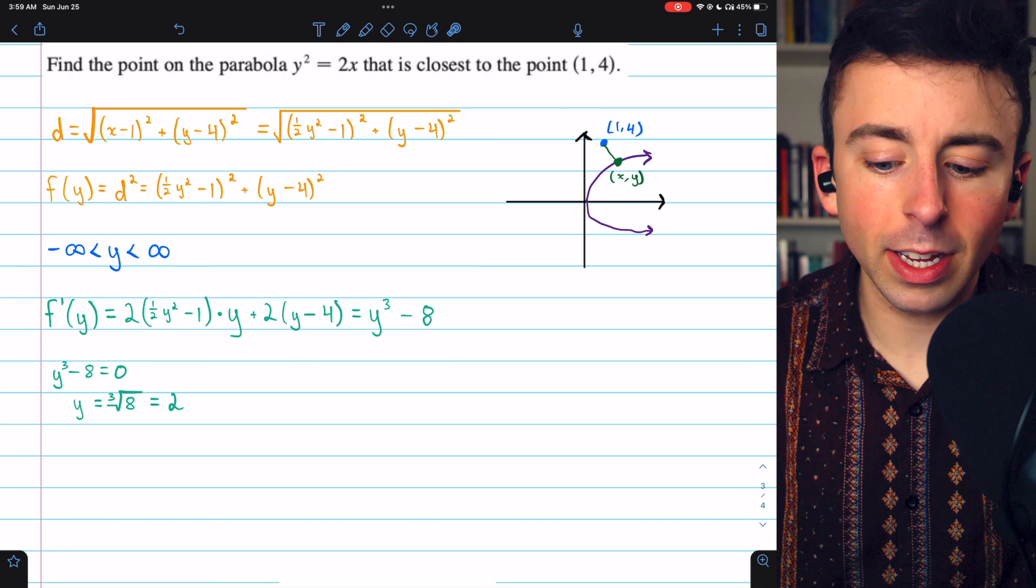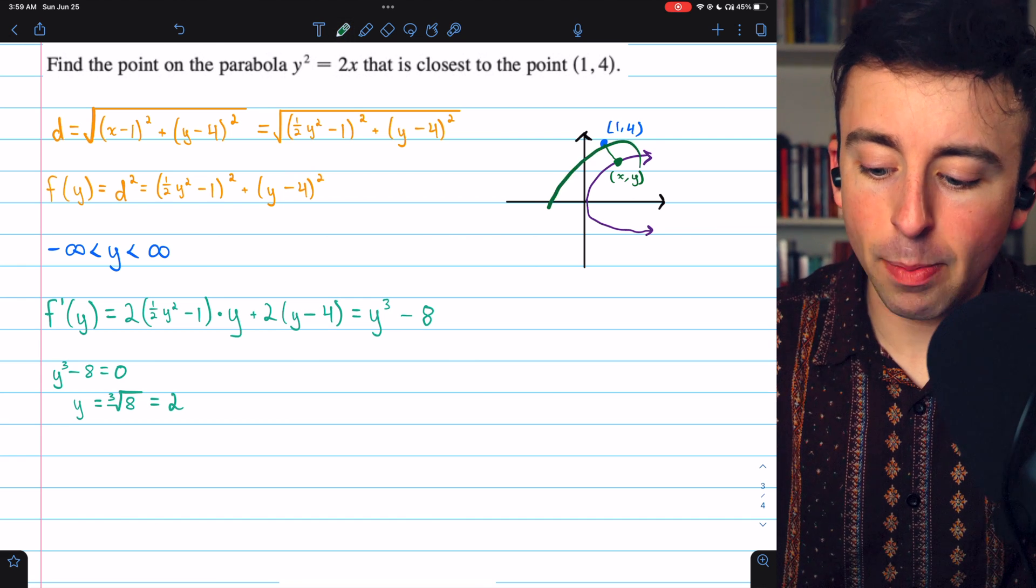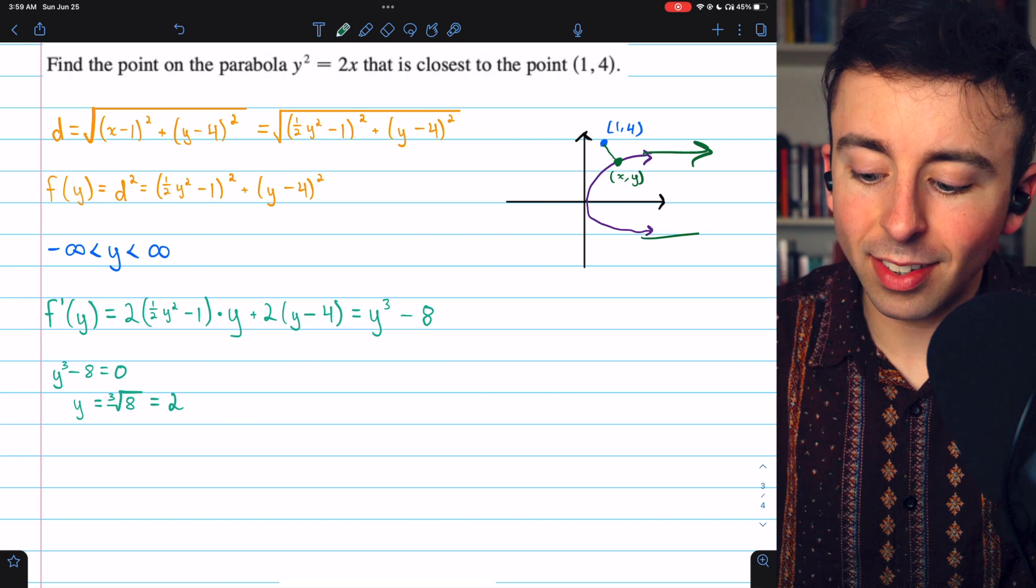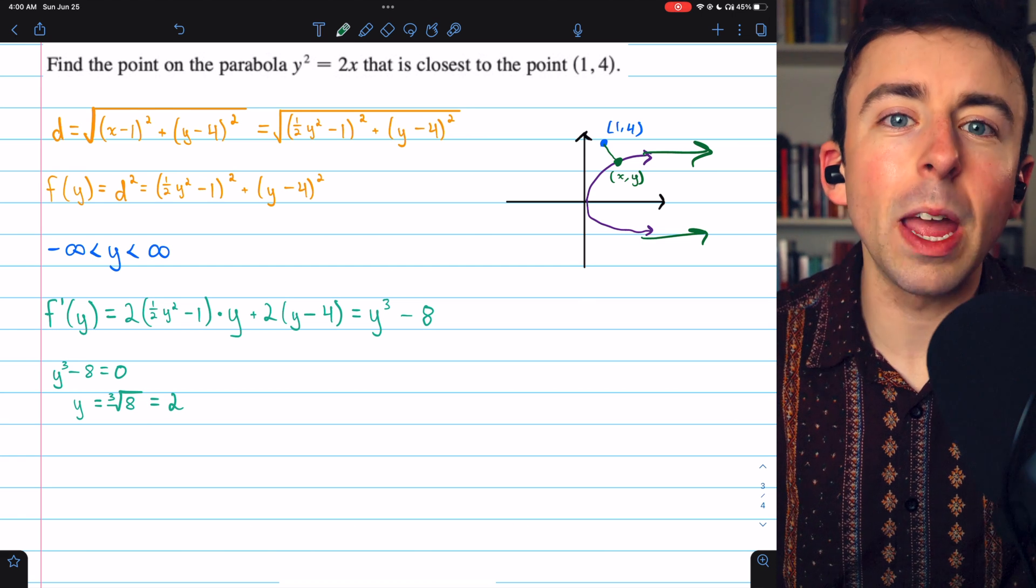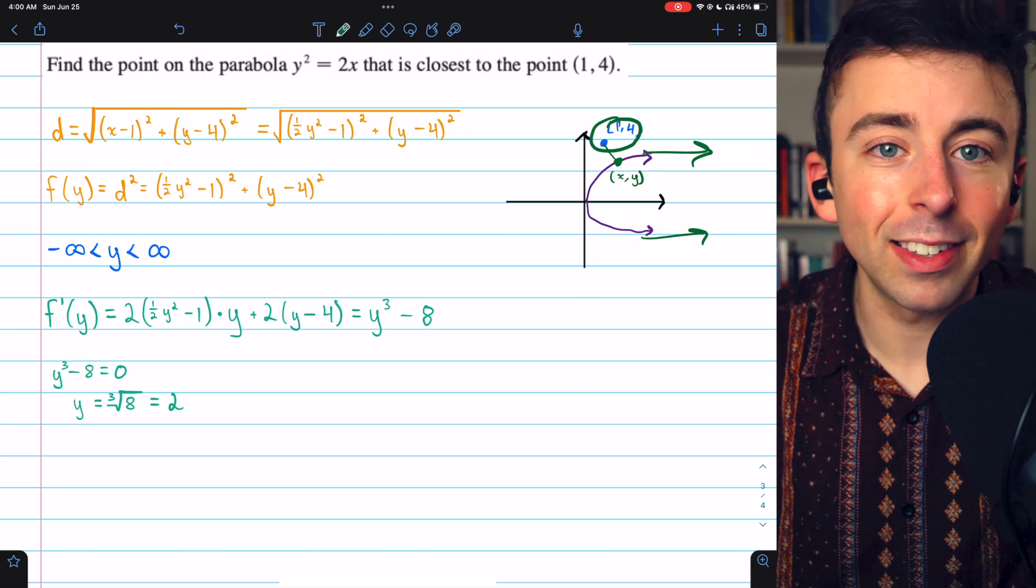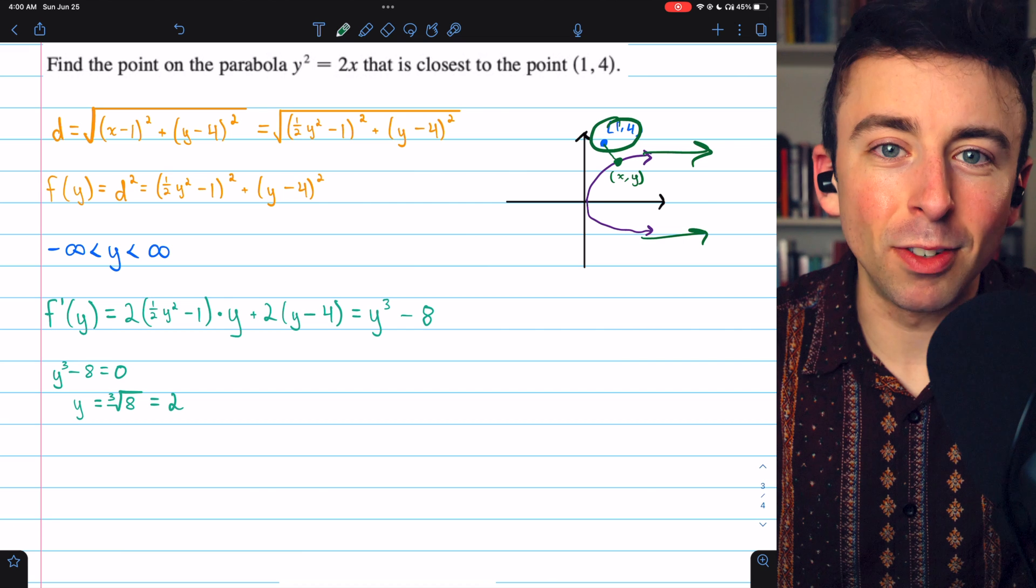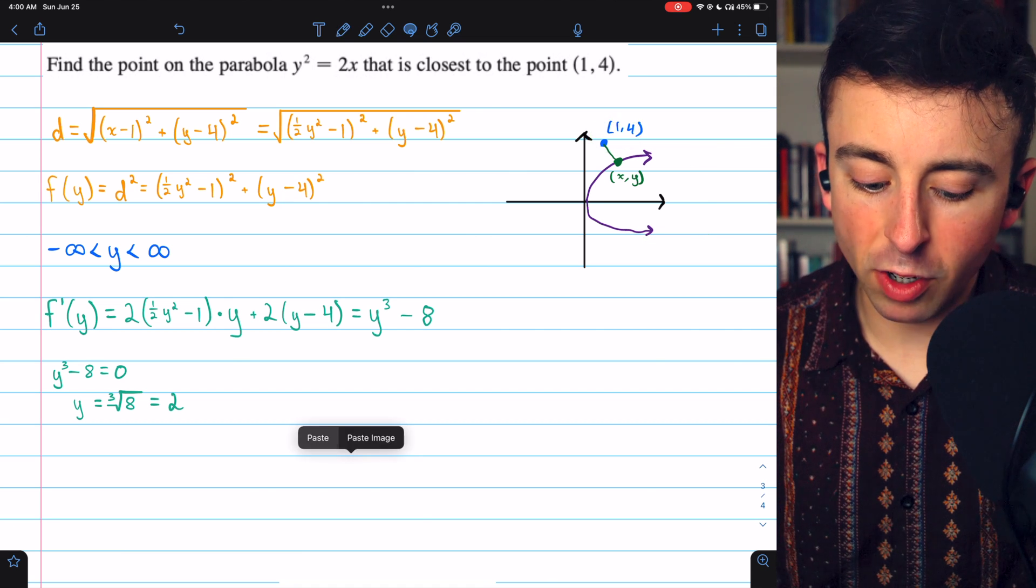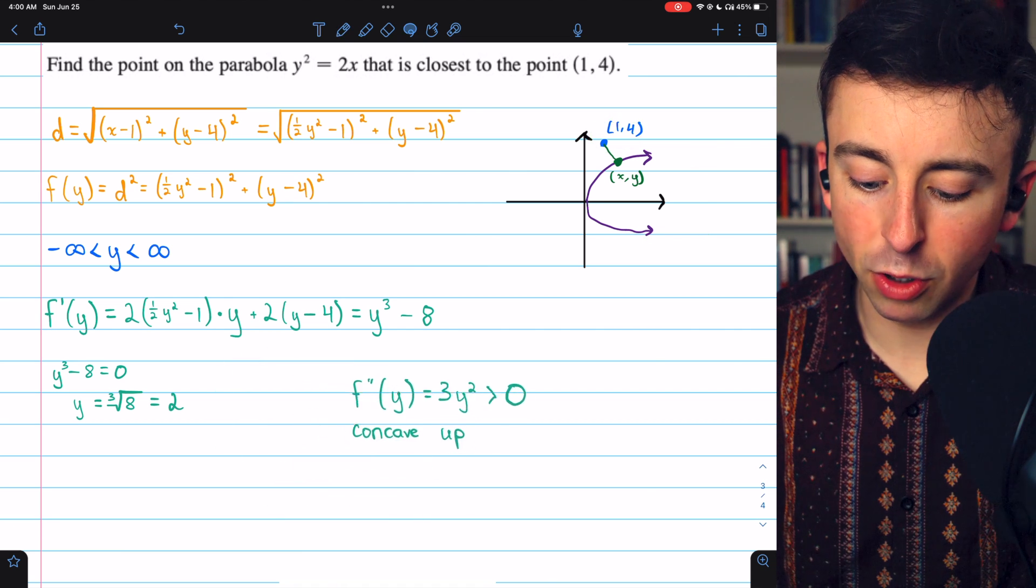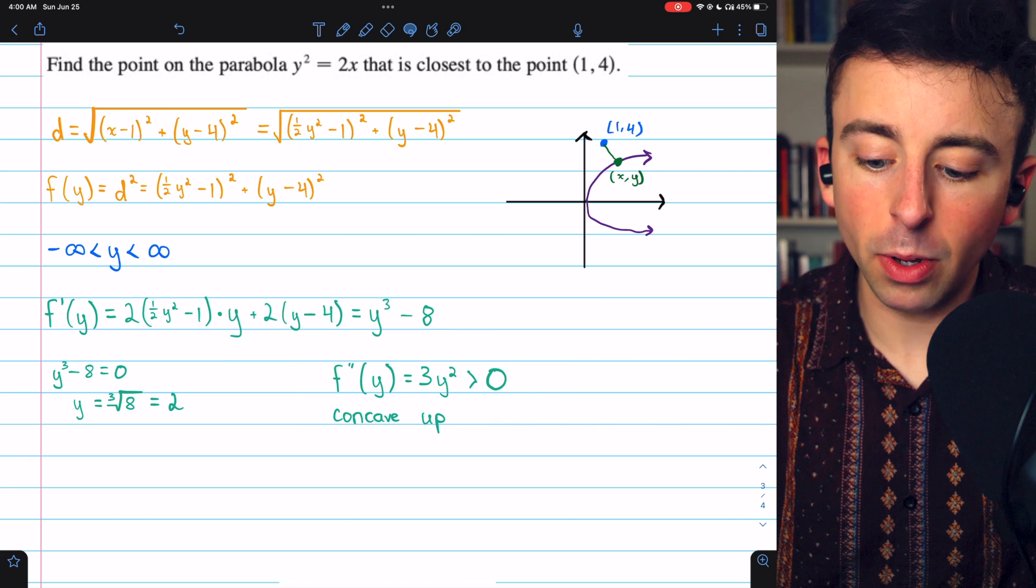You could also just use some geometric intuition and say, hey, this parabola goes on forever. Obviously there's not going to be a point on it with a maximum distance from this fixed point, but let's just use calculus. The geometric intuition assures us that y equals 2 is a minimum, and the calculus confirms it.